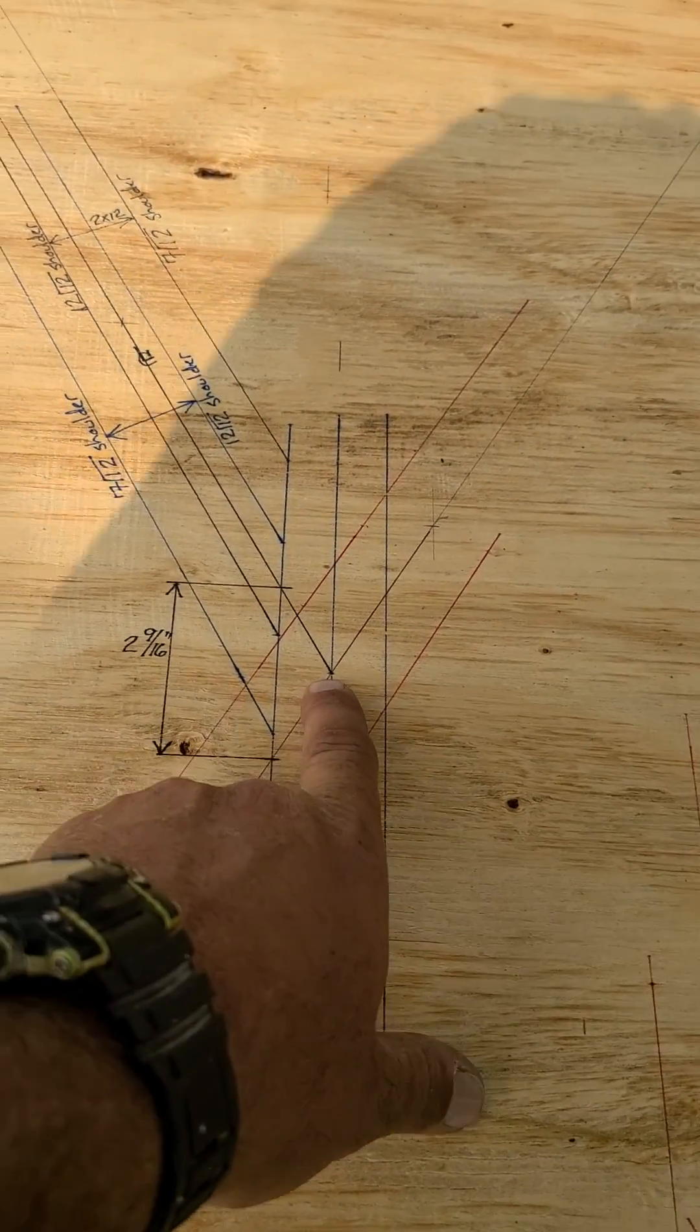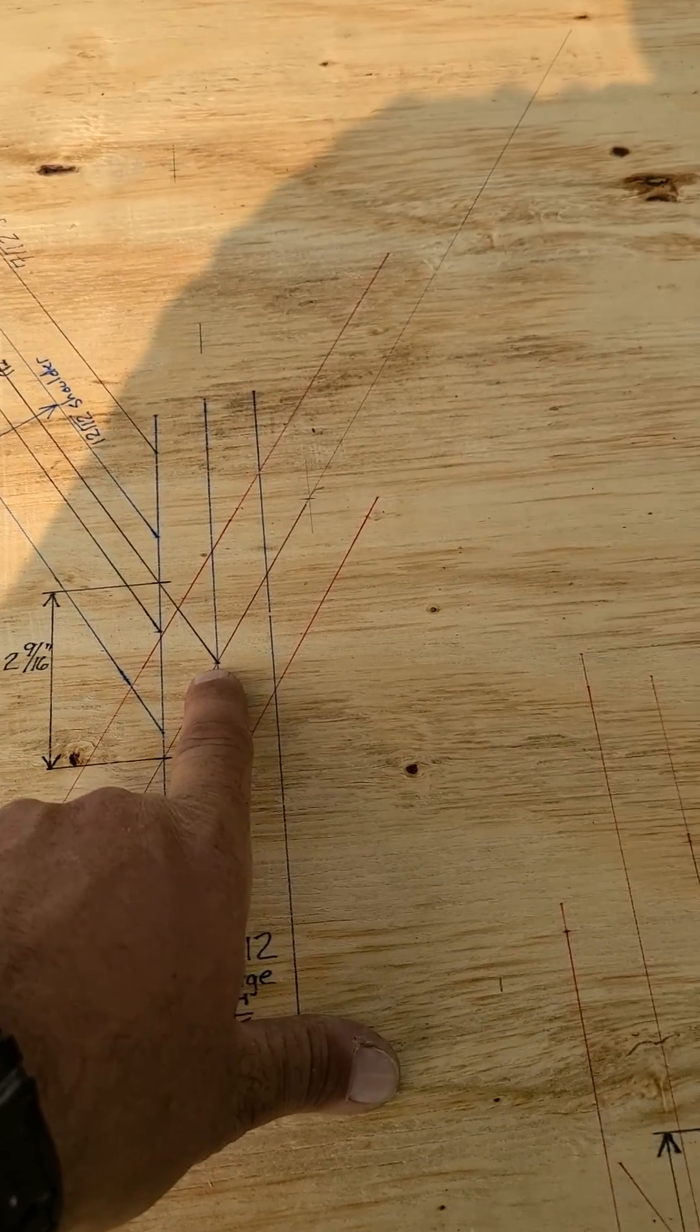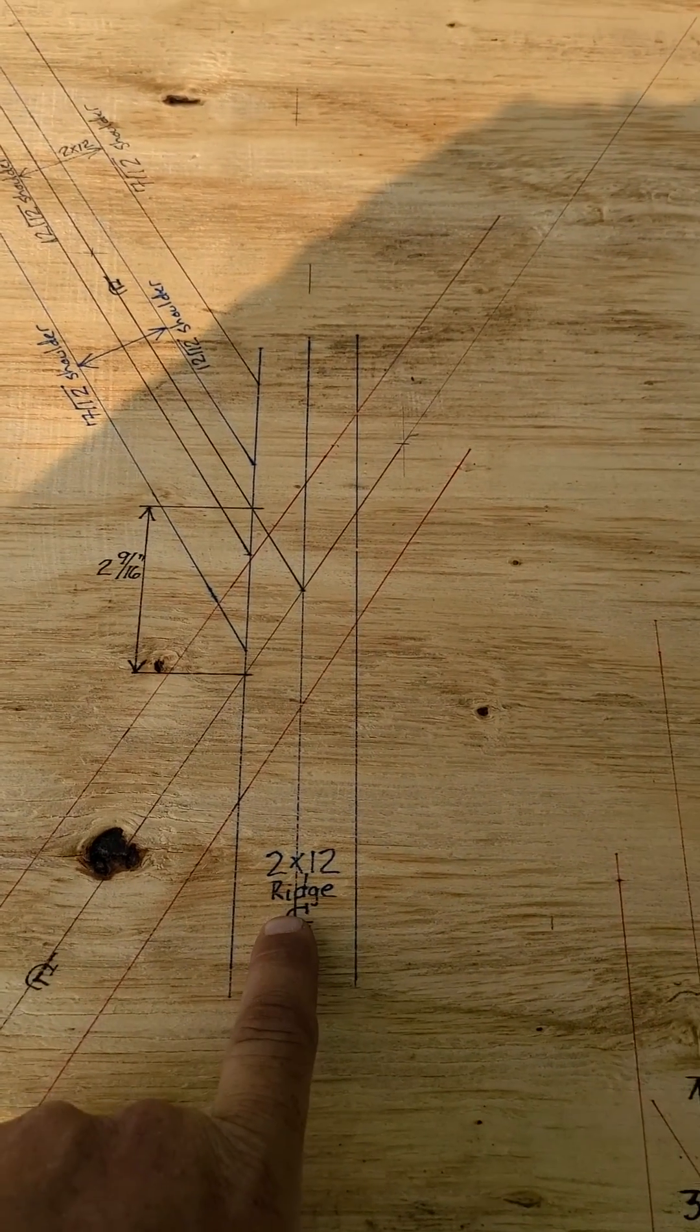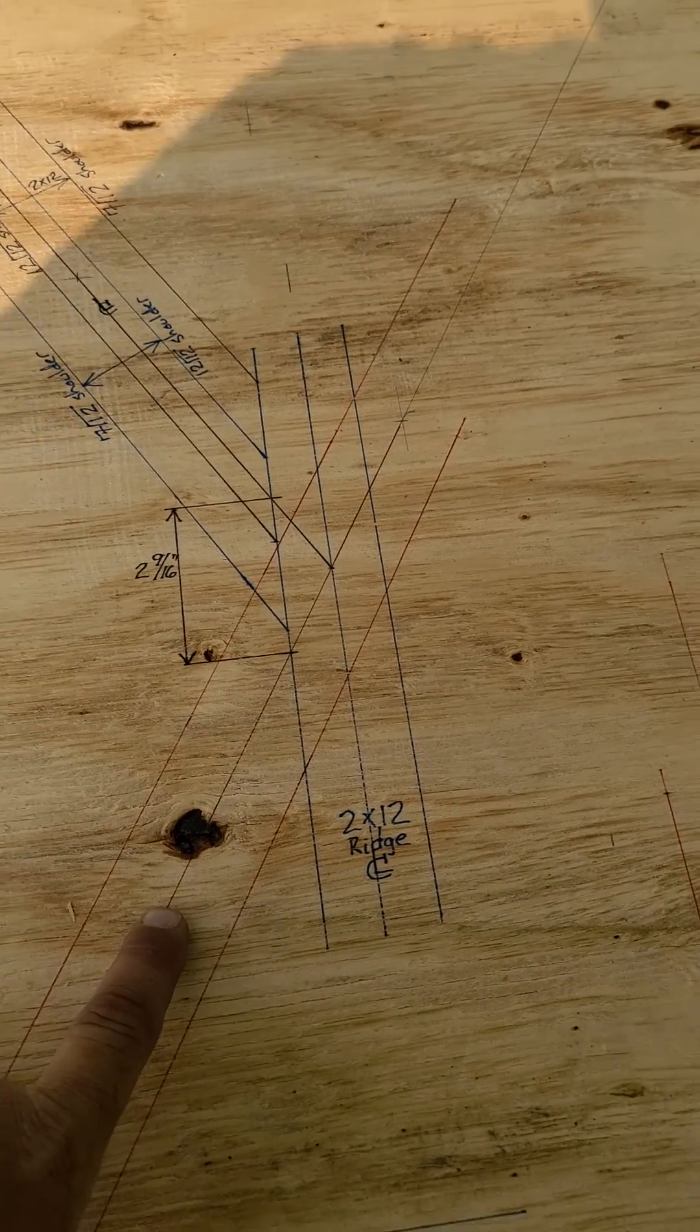So the framing point is never, ever going to change. It's always the center of the ridge. In this case, that's a 2-by-12 LVL valley.